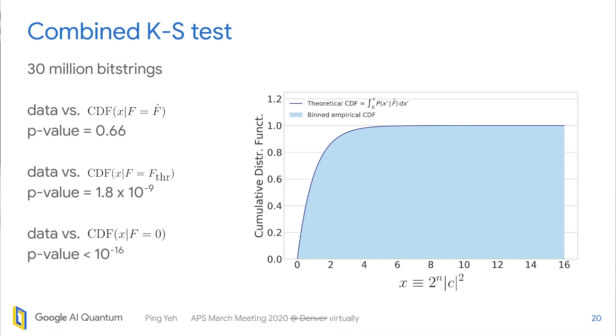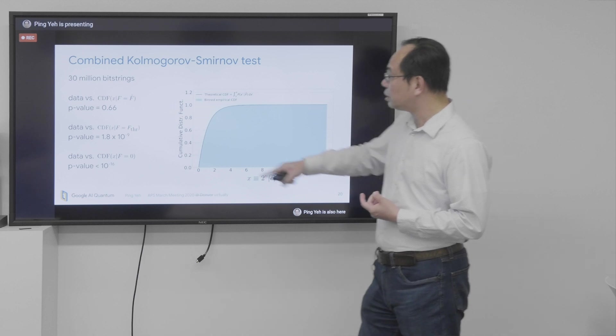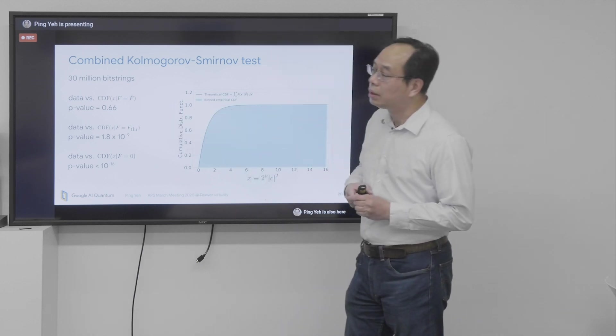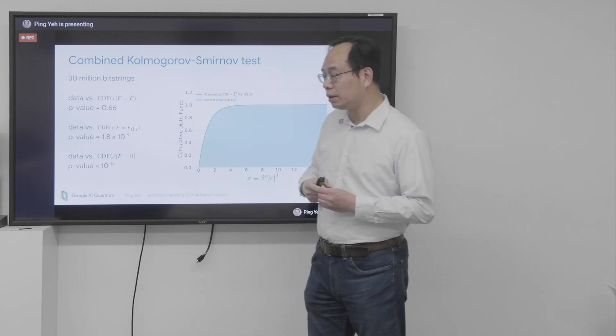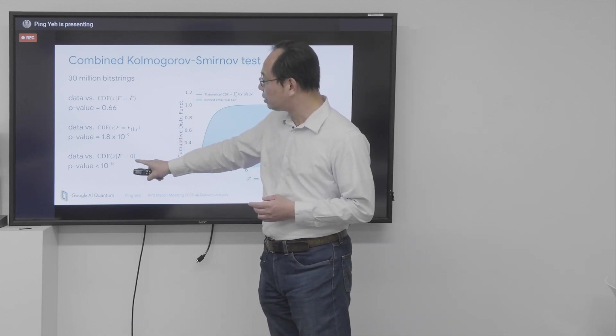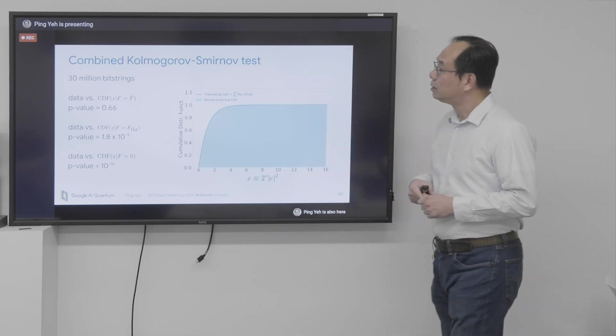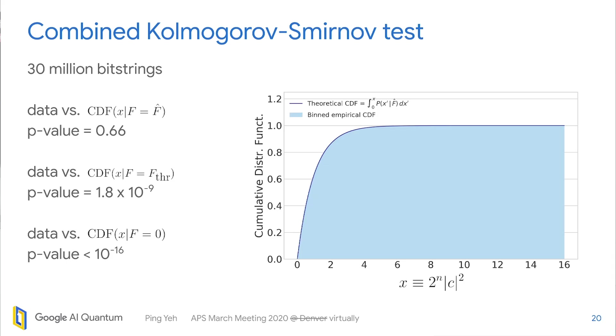And with a combined sample, we can, again, test the agreement between theory and data. And we can see that with this combined sample, there are 30 million samples. So the p-value is still reasonable, 66%. But if you say what's the p-value for a threshold fidelity, it becomes very, very low. And for zero fidelity, it's even lower. So this gives us more confidence that the combination process makes sense.